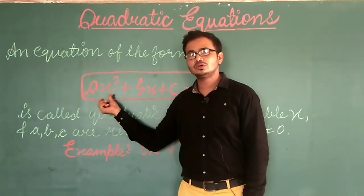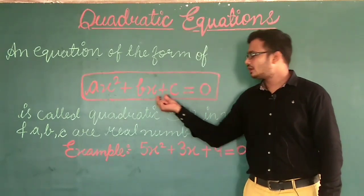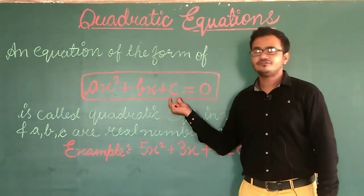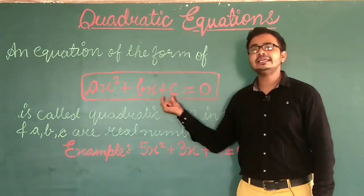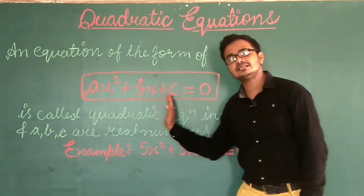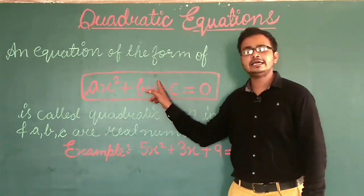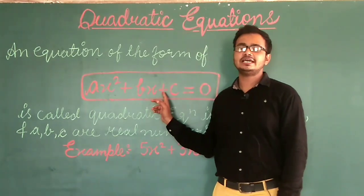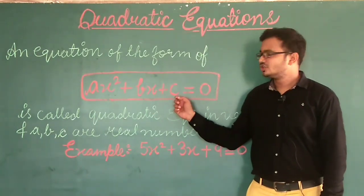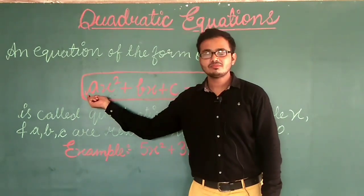If A becomes 0, when we multiply 0 with X square that term becomes completely 0, so only the X power 1 term remains — the degree becomes 1 and it becomes a linear equation. So this is the condition: A should never be 0.